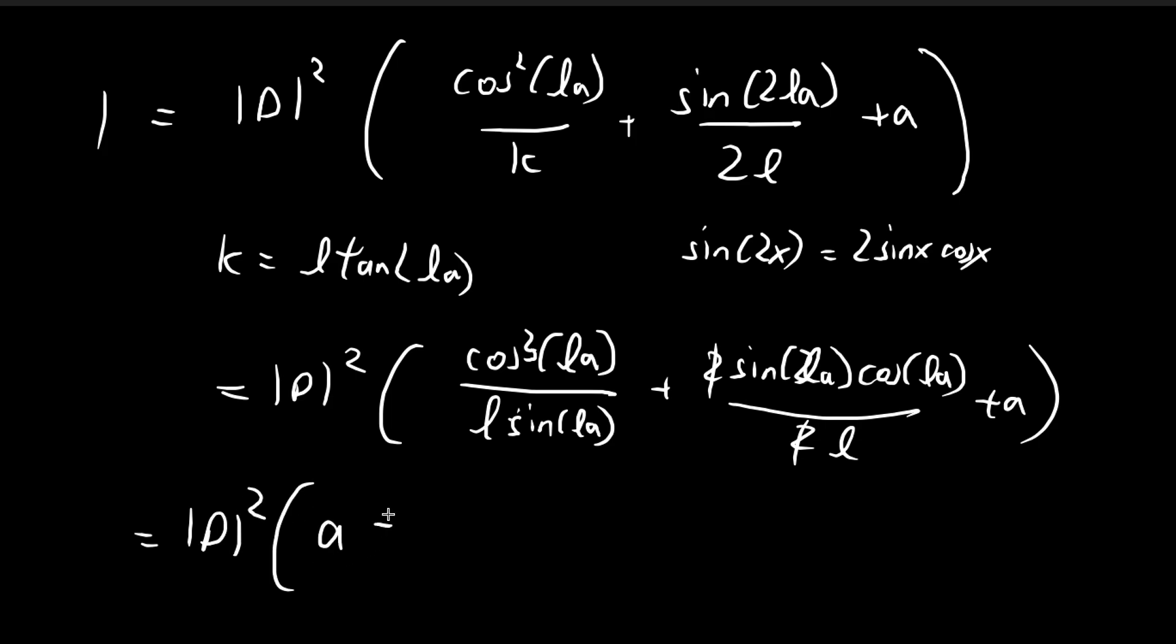So d squared. Now what I'm going to do is pull out some terms. I'm going to pull out cosine l a, and then also pull out the l in the denominator, and sine l a as well. So by doing this, what remains in the bracket is that we have a cosine squared l a.